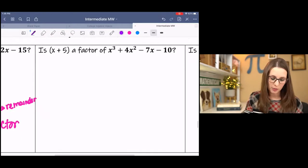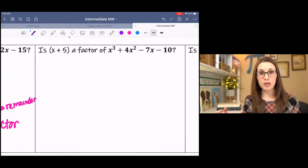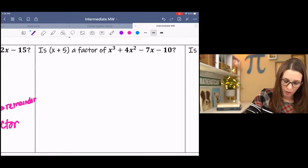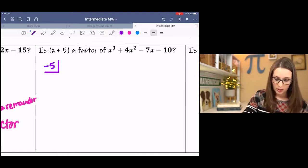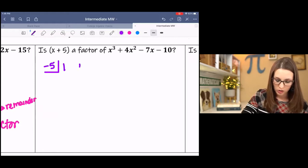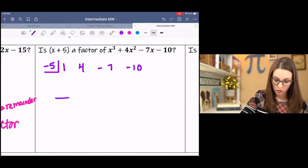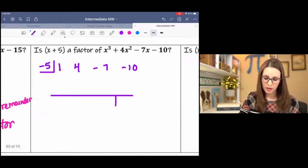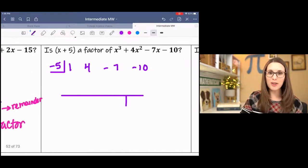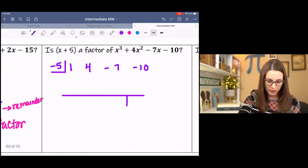Next example. I have, is x plus 5 a factor of this polynomial. So in my box I'm going to do negative 5. And then take the coefficients. It's already written in descending order. Make sure your signs are correct. I will say I don't think I have an example like this. Yeah I do on the next one, never mind.